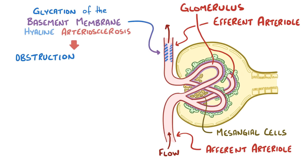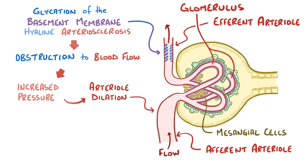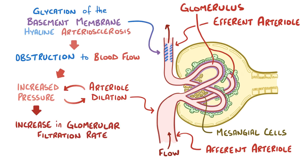This creates an obstruction that makes it difficult for blood to leave the glomerulus, which increases pressure within that glomerulus. At the same time, the afferent arteriole dilates, allowing more blood flow into the glomerulus and increasing pressure even more. High pressure in the glomerulus leads to an increase in the glomerular filtration rate — the amount of blood filtered per minute. This is the first stage of diabetic nephropathy, called hyperfiltration.